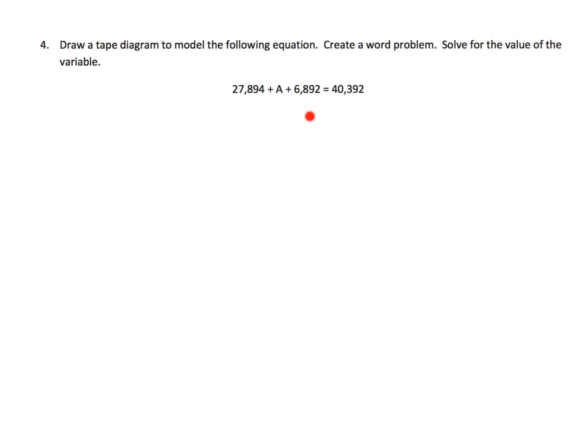Here they've given us even fewer pieces of information. Now we have to draw the tape diagram that matches this and then create the word problem. For me, I'm just going to give you the tape diagram and then let you create your word problem. So I see that three numbers are being added to equal 40,392.